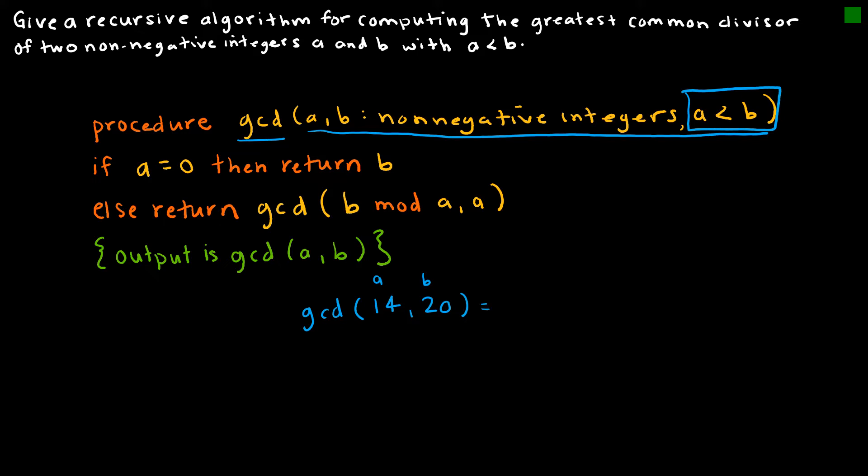So what that's saying is, all right, go ahead and do your Euclidean algorithm that said this is the same as 20 is equal. I'm going to change that to a semicolon. 20 is equal to 14 times 1 plus 6. So again, this is that mod, B mod A is 6. So it's saying, okay, return GCD of B mod A, which is 6, and A, which is 14.